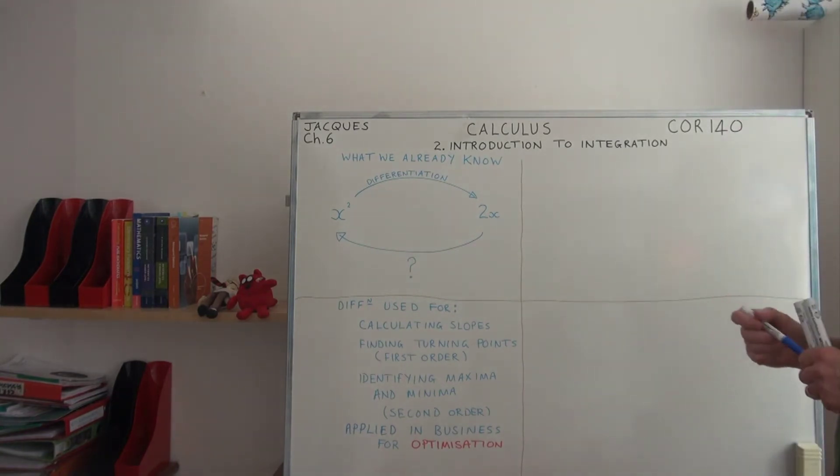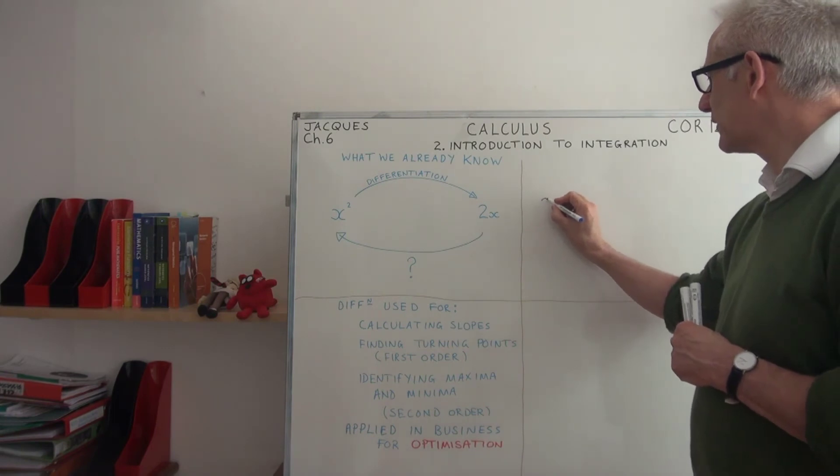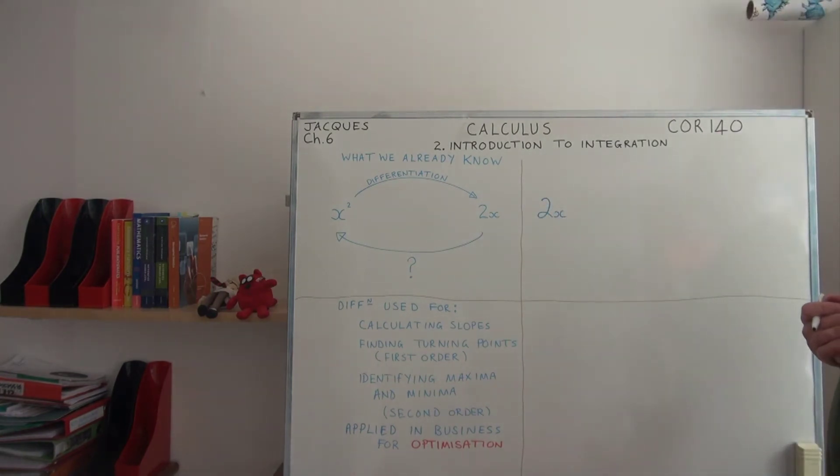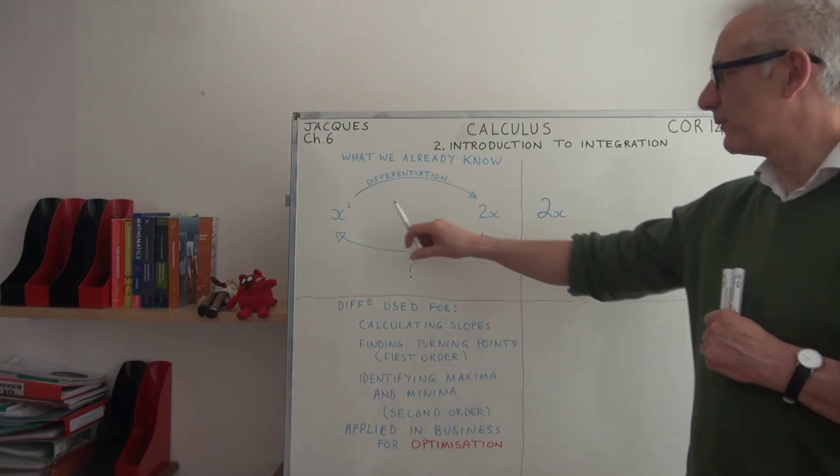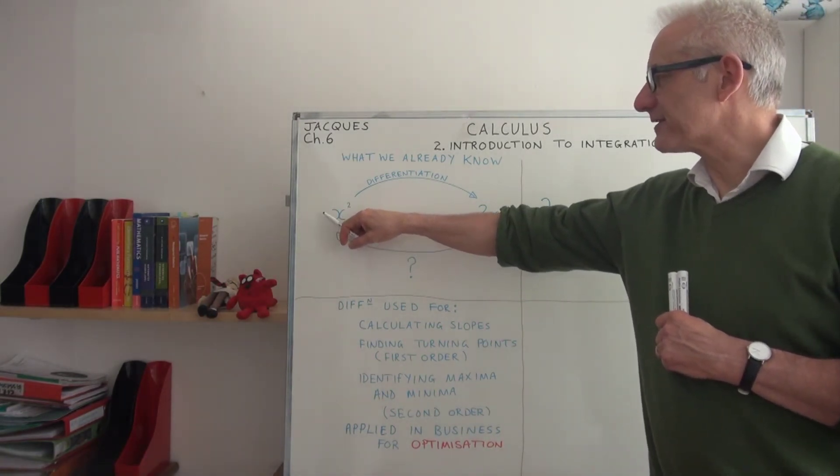I'm going to move to the other side now and we're going to try and describe a reverse operation here. We're going to start with 2x on this side and try to get ourselves back to x² on this side. Starting with 2x, remember what we did for differentiation: we took the power, put it in front as a coefficient, and moved the power down.